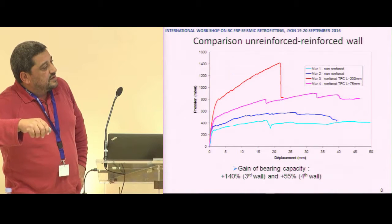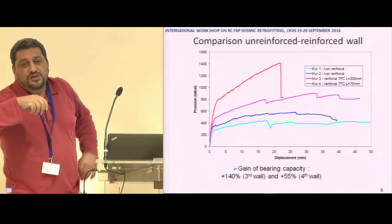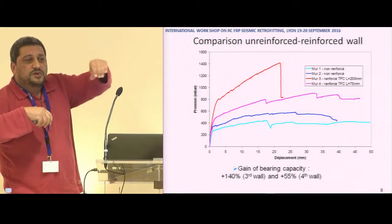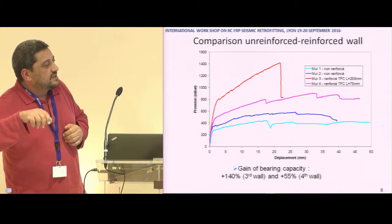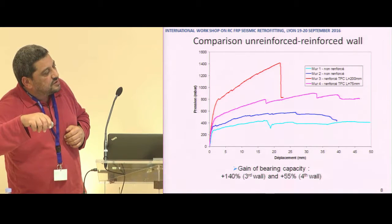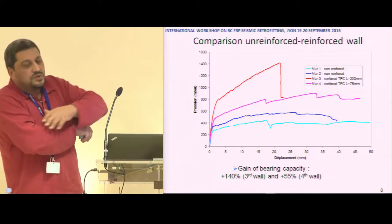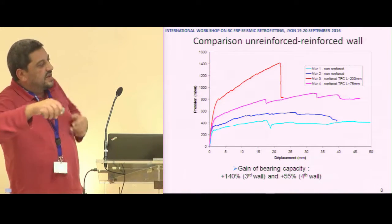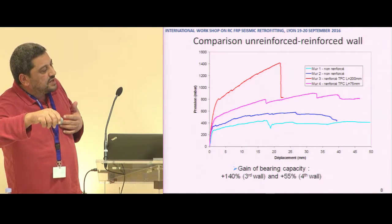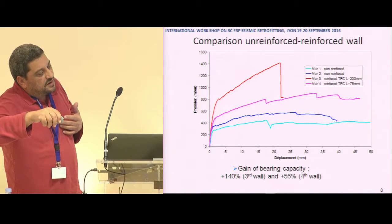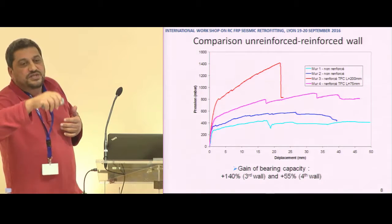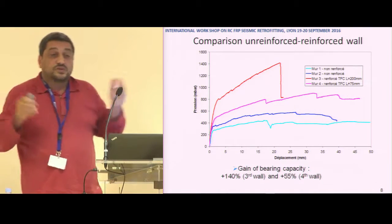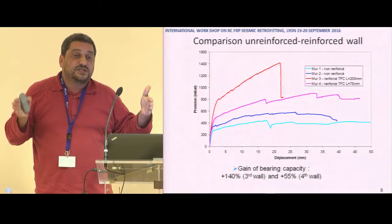The first curve is obtained for the unreinforced configuration with the beam at the bottom boundary condition. You can see that the crack appearance occurs at about 270 millibars. Then we have crack propagation and then collapse. But there is stress redistribution and we can see that we have high ductility in this case, due to the rigidity of the return walls.